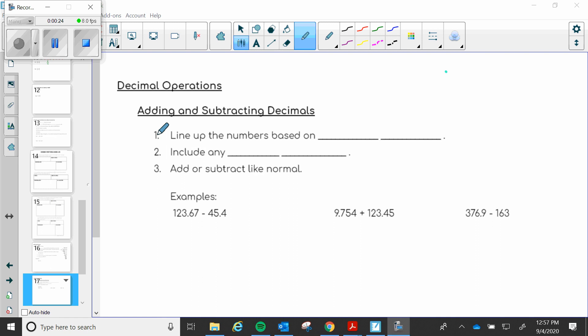Let's just get started. Step one, you line up the numbers based on their decimal point. You need to make sure that when you are lining up your numbers, the decimal points are in the same place and if they're in the same place then all of your other numbers are going to fall into place as well.